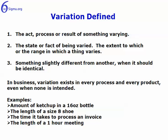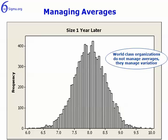The second takeaway is that managing averages never serves an organization well. An average as a model is not a great representation of the data when the data is highly dispersed. World-class organizations don't manage averages — they manage the variation. The example I like to use for this is McDonald's.